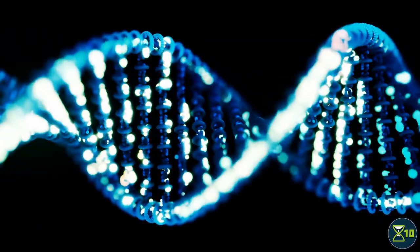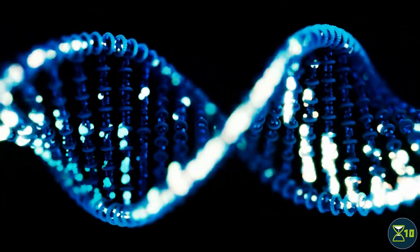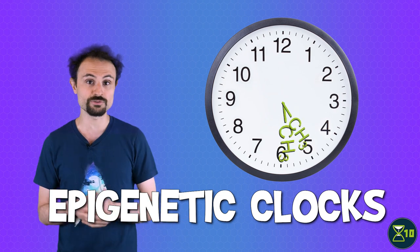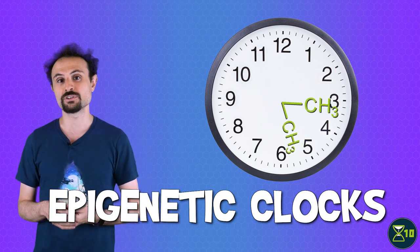Modern sequencing technologies have given us a much more detailed picture of what's happening. In fact, scientists can now use the methylation levels of DNA to estimate someone's age. These epigenetic clocks are interesting and potentially useful, but that's a topic that deserves a video of its own.